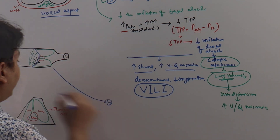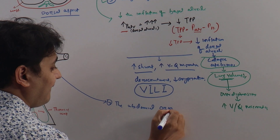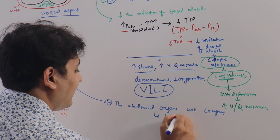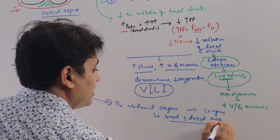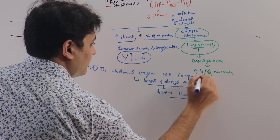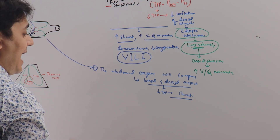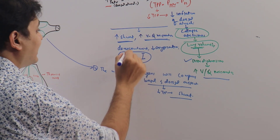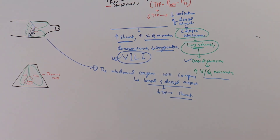The fourth point: abdominal organs compress the basal and dorsal aspects of the lung, causing a decrease in trans-pulmonary pressure and shunt. All of this further decreases the baby lung size. Because we are giving the same tidal volume, there will be over-distension and VQ mismatch, resulting in shunt, VQ mismatch, de-recruitment, decreased oxygenation, and lung injury.